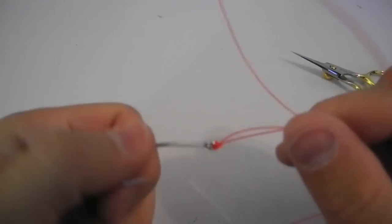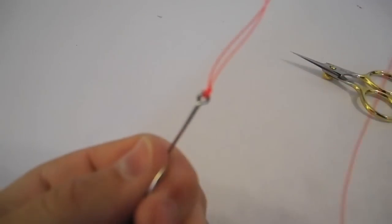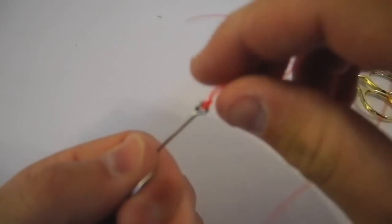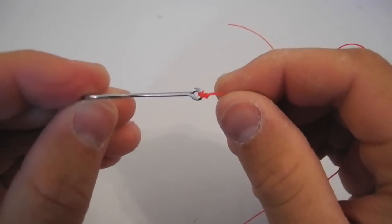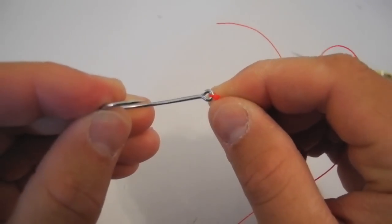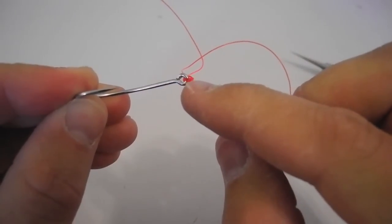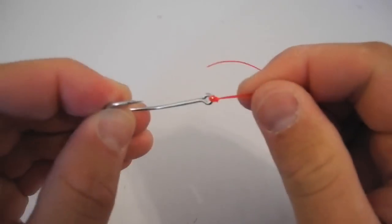I don't know if you can really see this or not, let me switch the settings here. But what I've done is on the eye of that hook, there's actually a doubled piece of line right there. Makes for a very strong knot.